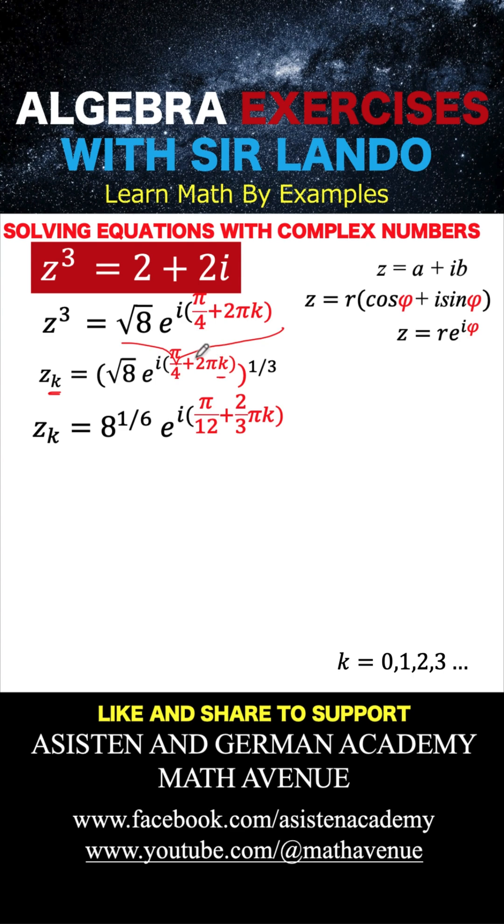Now, simplifying this, this is a product that is raised to an exponent. So the first factor raised to exponent 1 third, that is the square root of 8 raised to 1 third, the result is 8 raised to 1 over 6. Then multiply this exponent to that exponent to arrive at i pi over 12 plus 2 thirds pi k. Now, simplifying this 8 raised to 1 sixth, we arrive at square root of 2. So again, this value for z depends on what is the value of k.